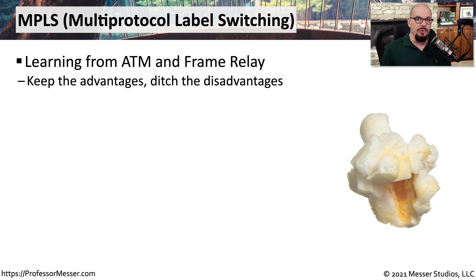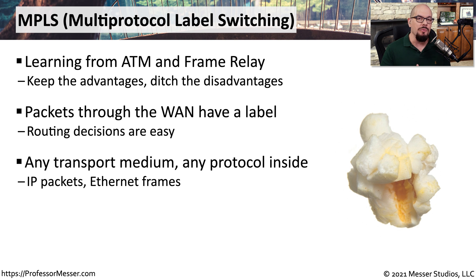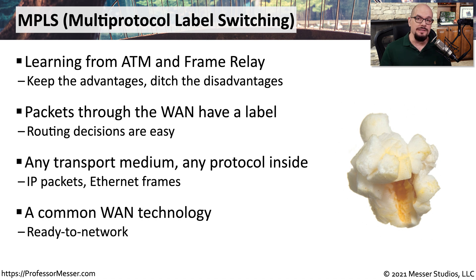Through the years we've had a number of different wide area network technologies — frame relay and ATM. As our needs changed, we needed a smarter way to communicate, so we created MPLS, multi-protocol label switching. This is communication through the WAN that uses labels to determine how we route and forward traffic. One advantage of MPLS is that we can use almost any type of connection and put almost any type of data inside — IP traffic, Ethernet frames, or any other type — making MPLS relatively easy to get up and running.